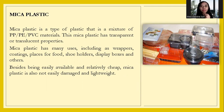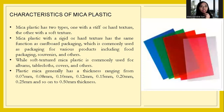Meka plastic is a type of plastic with transparent properties. It is used as wrappers, food containers, display boxes, and holders. It is available in various shapes, is not easily damaged, and is lightweight. Meka plastic has two types: one with a stiff or hard texture, which functions similarly to cardboard packaging, and one with a soft texture.